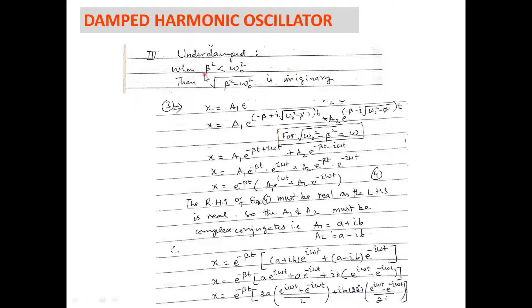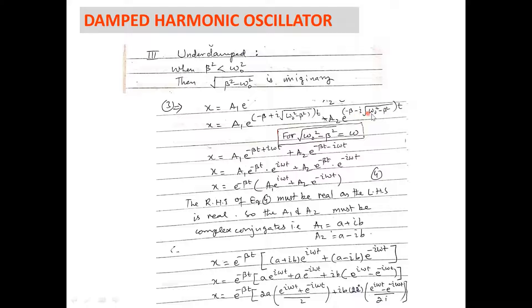The third case: we now suppose that beta-squared is less than omega-naught-squared. This means the square root of (beta-squared minus omega-naught-squared) would be an imaginary term. With this supposition, equation 3 updates to x equals a1·e^(−(beta minus iota·omega_1)·t) plus a2·e^(−(beta plus iota·omega_1)·t), where omega_1 is the square root of (omega-naught-squared minus beta-squared). Because omega-naught-squared is now bigger than beta-squared, we write omega-naught-squared first, and the minus sign under the root becomes iota.